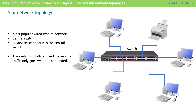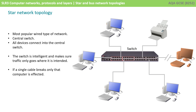The star network is by far the most popular wired type of network today. The idea is that you have a central switch and all the computers connect into that single central switch. One of the advantages here is that if you get a break in one of the connections, then only the computer connected to the switch will be affected.